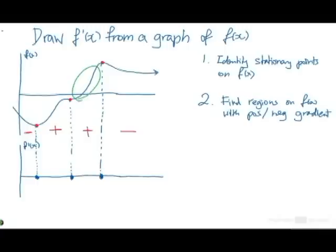So, that's the second step out of the way. The last step is really putting all of our information together. So, basically, draw a line that fits the regions, the positive or negative regions.